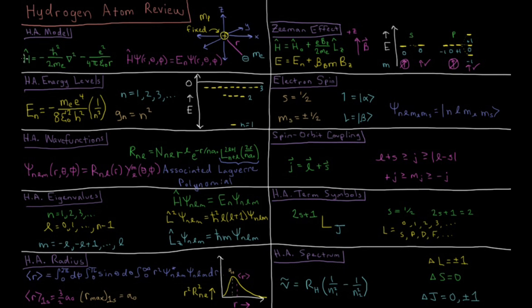Defining our Hamiltonian, we have the kinetic energy of the electron. The proton has no kinetic energy because it is fixed. That's minus h-bar squared over two times mass of the electron, or the reduced mass of the electron-proton system, times the Laplacian operator, second derivative with respect to all spatial coordinates, minus Coulomb's law acting between them: e squared over four pi epsilon naught times R.